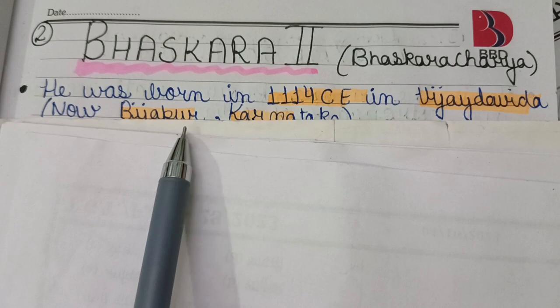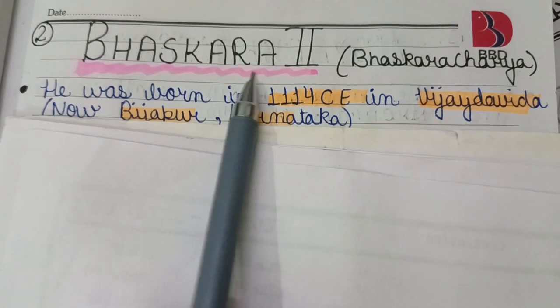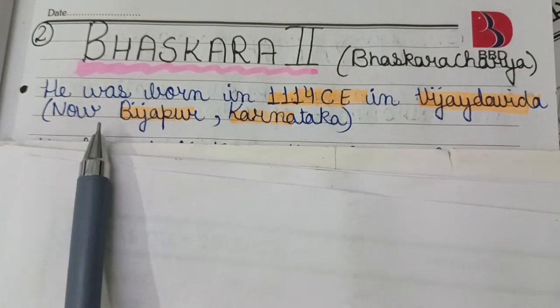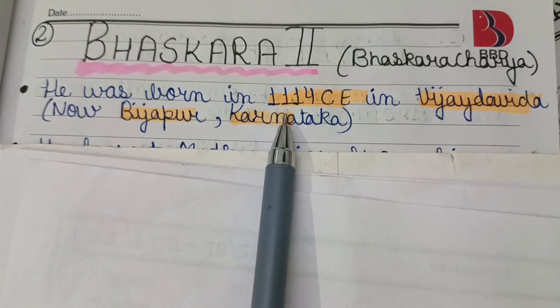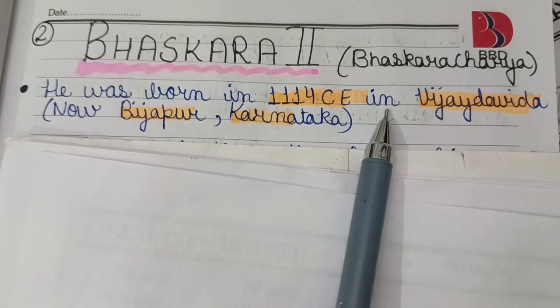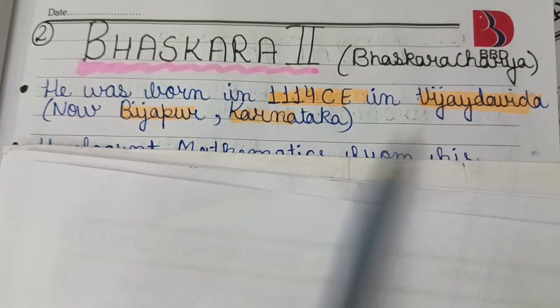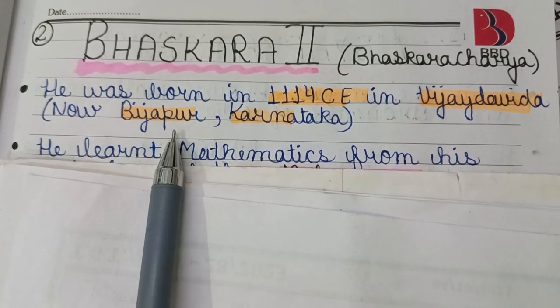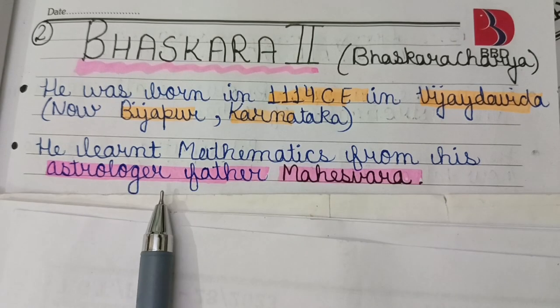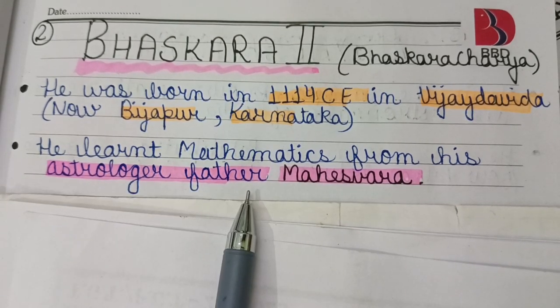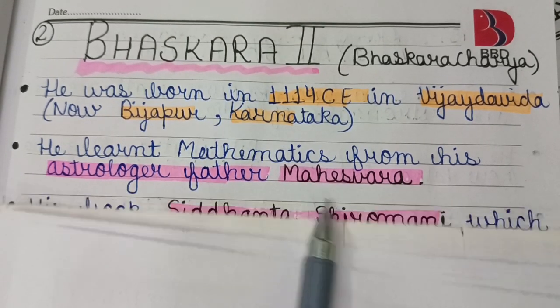The next scientist is Bhaskara II, also known as Bhaskaracharya. He was born in 1114 CE in Vijayapur, Karnataka. He learned mathematics from his father, an astrologer named Maheshwara.